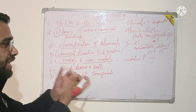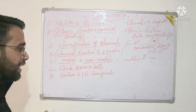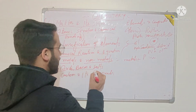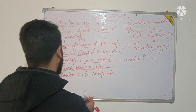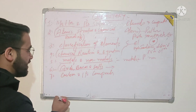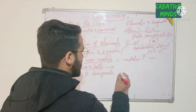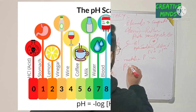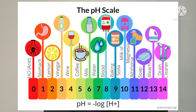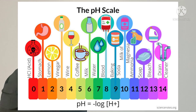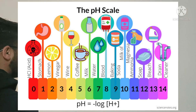Acids, bases and salts is also an important topic. You will study about acids, bases and salts, and you will study the pH scale from 0 to 14 — what the pH scale is, what salts are, and what acids are.